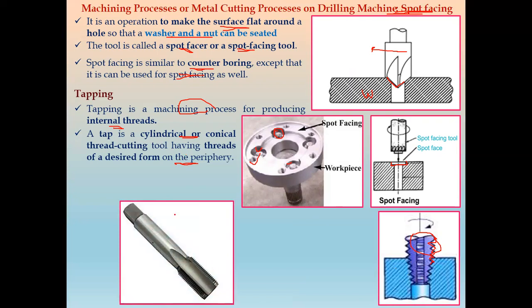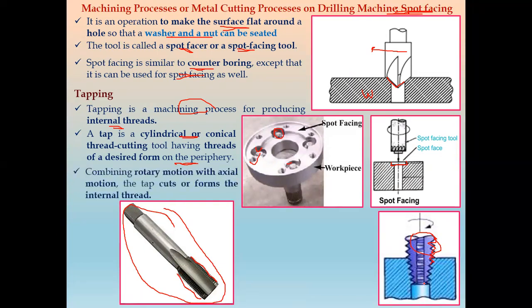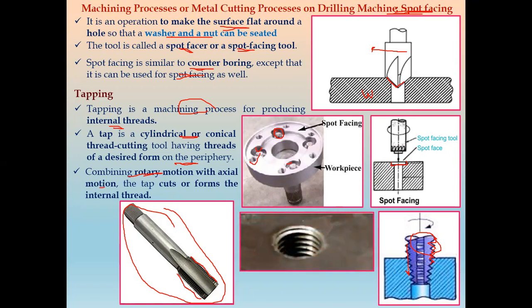The tap is either a cylindrical or conical thread cutting tool where the thread of desired form is formed on the periphery of a drilled hole. For tapping, both rotary motion and axial motion take place simultaneously — the tap rotates while also moving downward — and because of this combination, the internal thread is cut inside the drilled hole.